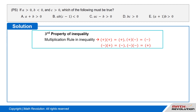Solution. The third property of inequality: when we multiply two quantities, the signs of inequality will change according to the multiplication rule of inequality. This is a basic inequality formula, so remember this carefully. Positive times positive equals positive; positive times negative equals negative; negative times positive equals negative; and negative times negative equals positive.